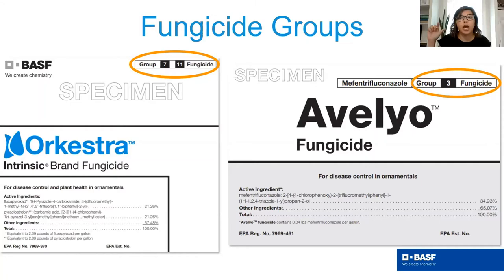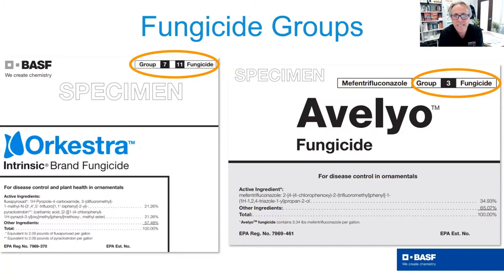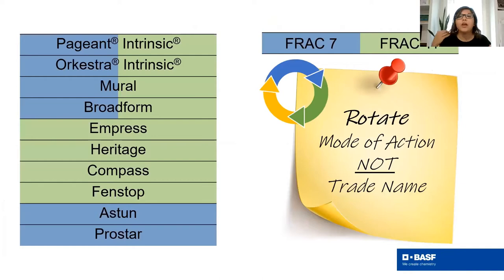You can find the chemical group FRAC codes on fungicide labels — usually on the front page, either at the top or somewhere in the middle. A good tip is to organize your chemical cabinets by FRAC codes. This makes selection easier because if two fungicides are on the same shelf next to each other, you know not to pick them both for a tank mix — that's probably not the most effective approach. Staying organized with accurate record keeping makes decisions easier.